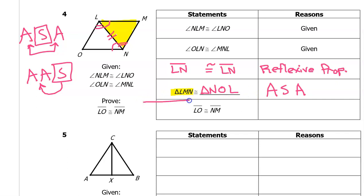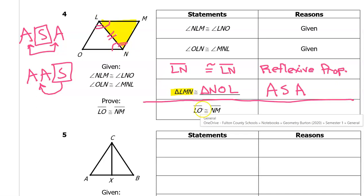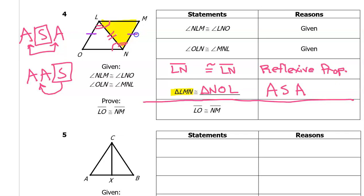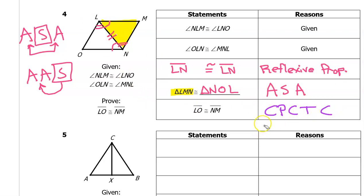That was the regular proof proving the triangles are congruent. Now it's time to add the extra statement where we say another pair of corresponding parts are congruent. Here they're talking about segment LO and MN. We've already proven the triangles are congruent, so we can say these additional corresponding parts are congruent by CPCTC.